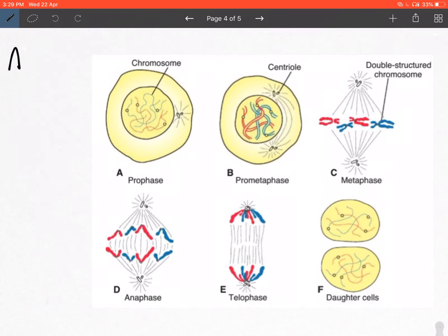Stage number one is prophase. Very simple—remember you just have to say that the chromatin starts coiling, supercoiling, and condensing to form chromatids.